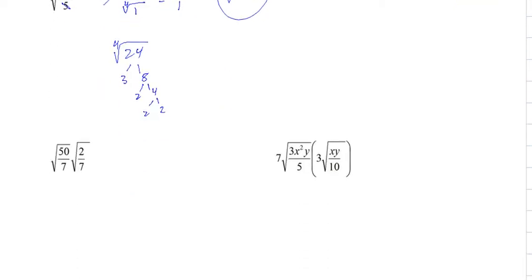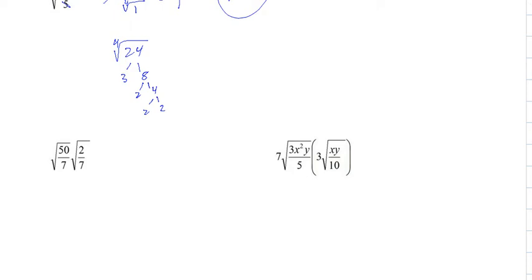Now what about with multiplication? It's the same rules that apply. You do inside with inside, outside with outside. So 50 times 2 is 100. 7 times 7 is 49. And I wouldn't want to simplify this even if we could because 100 is a perfect square and 49 is a perfect square. So we would get 10 over 7. That's it.